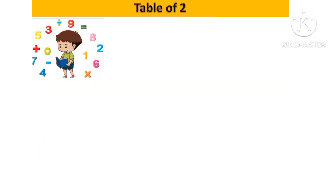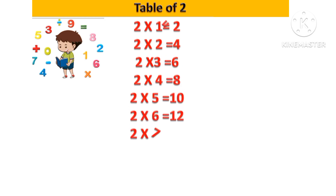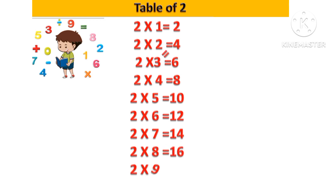Let's revise table of 2. 2 1s are 2, 2 2s are 4, 2 3s are 6, 2 4s are 8, 2 5s are 10, 2 6s are 12, 2 7s are 14, 2 8s are 16, 2 9s are 18, 2 10s are 20.